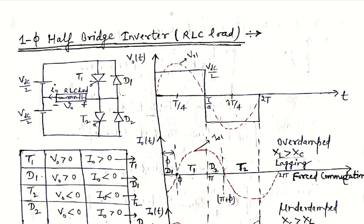Now we will see the circuit topology of this R, L, C load configuration. There are two thyristor switches and two diodes connected in anti-parallel with the two thyristor switches, and there is a load which is R, L, C. The DC supply is applied to the inverter input and it is divided into two parts for the half bridge topology: Vdc/2 and Vdc/2. Reference polarities for the voltages and currents are marked as shown in the figure.